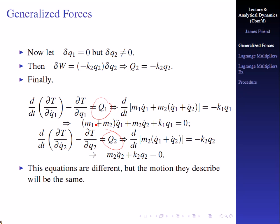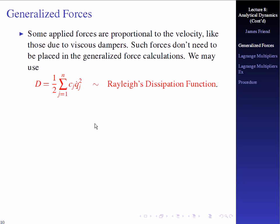If generalized coordinates are defined with respect to a moving location, this equivalence may be violated. Always refer back to the virtual work statement. Some applied forces are proportional to velocity, like those from viscous dampers. You can model those using Rayleigh's dissipation function, which we'll call D. Every book uses a different letter — script H, script F — but we use D for dissipation. It's defined as one-half the sum of the damping coefficient c_j times q-dot_j squared.